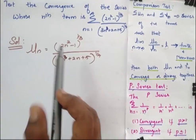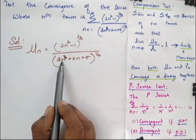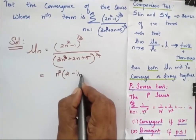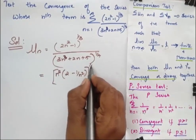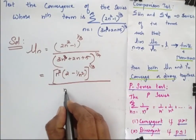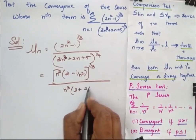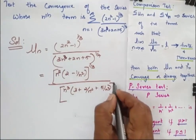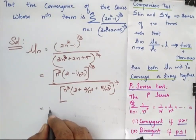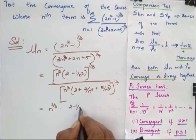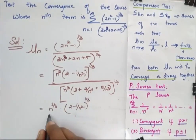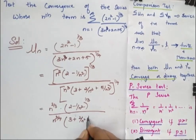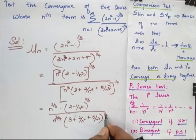To simplify, I am going to take n² commonly outside, and here n³ commonly outside. So I will get n² into (2 minus 1/n²) to the power 1/3 in the numerator. For the denominator, taking n³ commonly outside gives (3 plus 2/n² plus 5/n³) to the power 1/4. So after simplification I will have n^(2/3) times (2 minus 1/n²)^(1/3) divided by n^(3/4) times (3 plus 2/n² plus 5/n³)^(1/4).